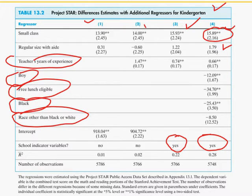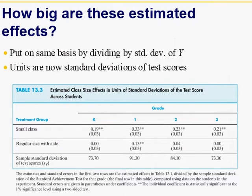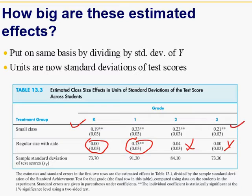After standardizing the variables, kindergarten has an improvement of 0.19 standard units, plus or minus three standard errors, compared to regular class size. Regular class with aide shows no difference. At other grades the improvement is around 0.21 standard units. In standard units, this difference, while statistically significant, may not appear very large when compared with the California and Massachusetts observational studies.